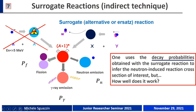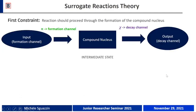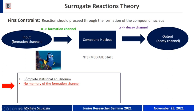The question is: how well does this method work? First, in order to use the surrogate reaction method, the neutron-induced reaction of interest should proceed through the formation of a compound nucleus. The incident neutron is absorbed by the target nucleus, and its kinetic energy is shared between all nucleons of the compound system, reaching an intermediate state called the compound nucleus that lives long enough to reach complete statistical equilibrium — meaning the system has no memory of its formation channel.